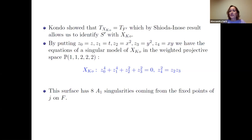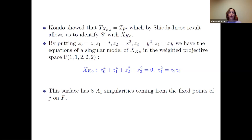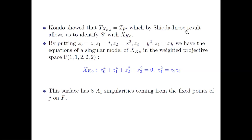The Shioda–Inose relation gives: 2 × T(F′) = T(F), so T(F′) = [4, 0; 0, 4], which turns out to be exactly the transcendental lattice of the Kondo surface. This gives a nice realization as a singular quotient. It has 8 A₁ singularities, and the equation can be written in terms of coordinates x, y, z, t in a weighted projective space P(1,2,2,2) as two equations. The surface contains exactly 8 singularities. Brandhorst and Shimada found a smooth equation in some higher projective space. Thank you very much for your attention.